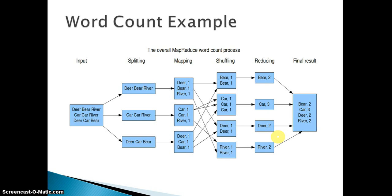As we discussed in the previous video, the input to the reducer would be key-value pairs — nothing but the word comma ones. Once we pass this as input to the reducer, the reducer will sum up the values by grouping keys. So if you can see here, it has grouped bear, which is the key, and summed up all the values, which is two — one plus one equals two.